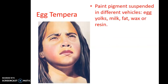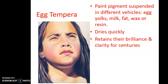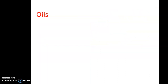Egg tempera is paint where the pigment is suspended in different vehicles such as egg yolk, milk, fat, wax, or resin. It dries really quickly and retains its brilliance and clarity for centuries — those are very positive qualities. However, if an artist works slowly, the fast drying time is not a good thing.